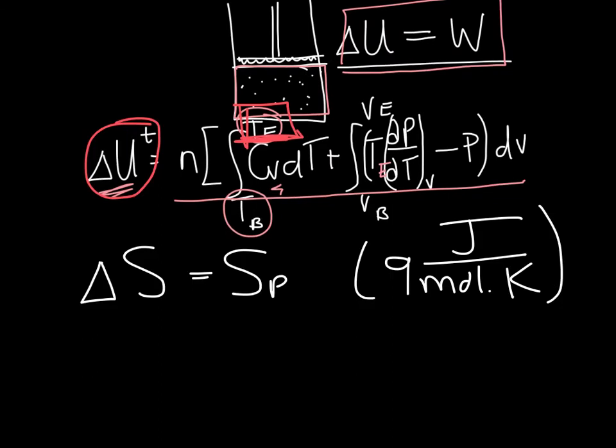And that, of course, is our entropy balance for this system. That says the change in entropy of the system is equal to the entropy produced, which was given.